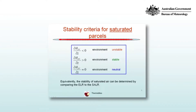In this video we are going to consider the stability criteria for saturated parcels of air. This can be expressed in terms of the lapse rate of the pseudo-wet bulb potential temperature. When dθSW/dZ is less than zero, the environment is unstable. When dθSW/dZ is greater than zero, the environment is stable. And when dθSW/dZ is equal to zero, the environment is neutral.